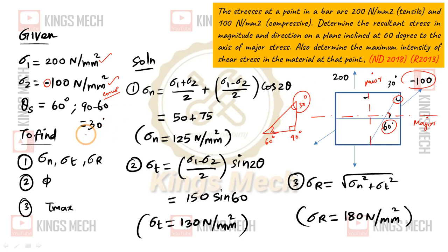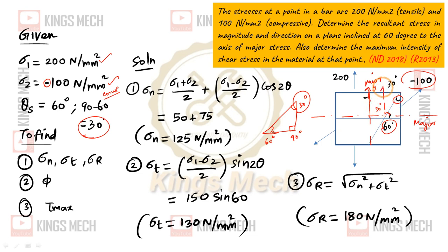So our angle theta = 30 degrees. Because we need to measure the angle towards the y-axis (minor axis). When the plane is at 60° to the major axis, the remaining angle is 30°. So 90 minus 60 equals 30 — that 30 degrees must be used as our theta.